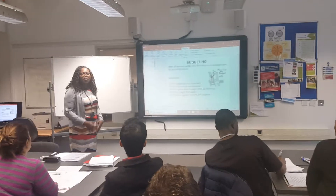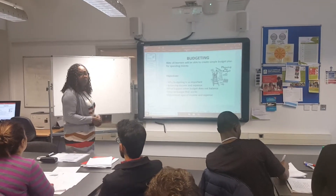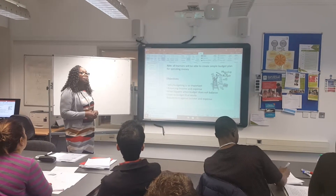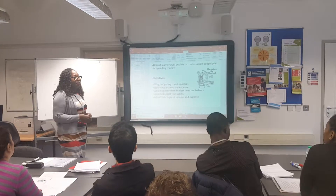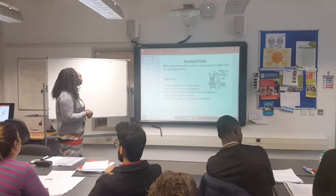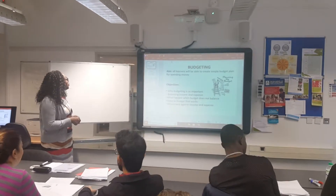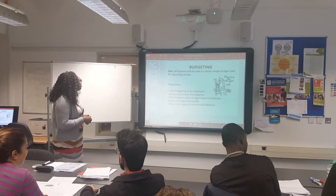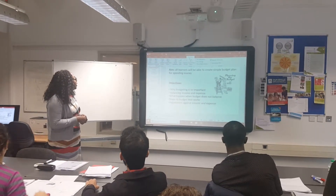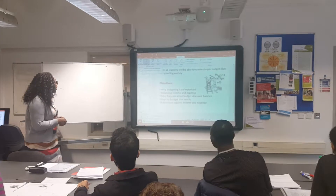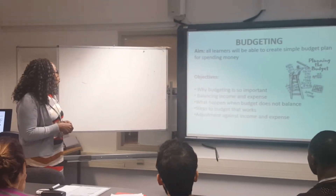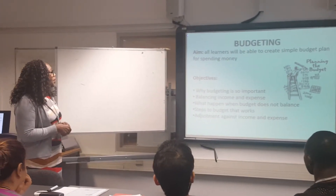It's a very simple form of budgeting that we are actually going to be doing, to do with your income and your monthly expenditure. Today our aim is that all of us will be able to create a simple budget plan for spending money. Our objectives: why budgeting is so important, balancing income and expense, what happens when the budget does not balance, steps to budget that work, and adjustment against income and expense.